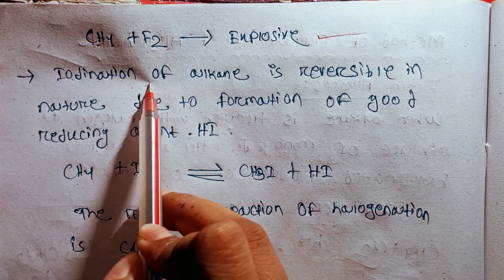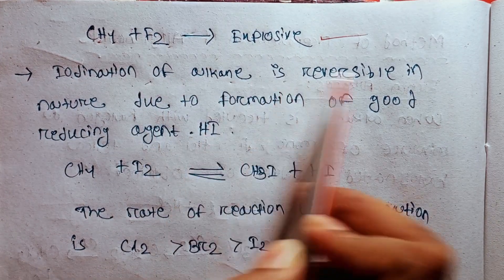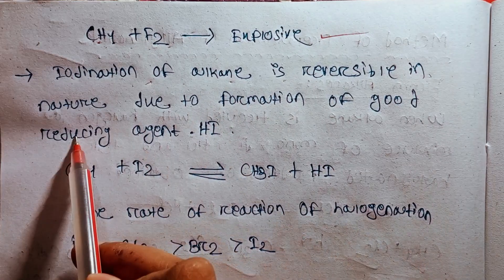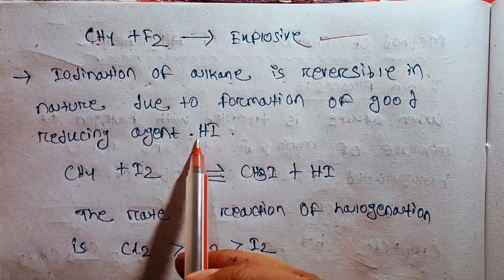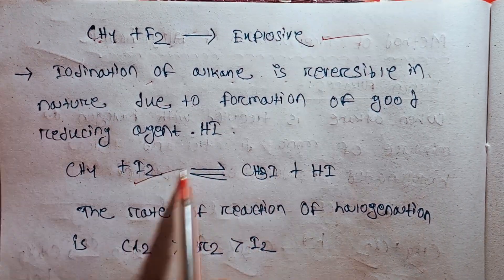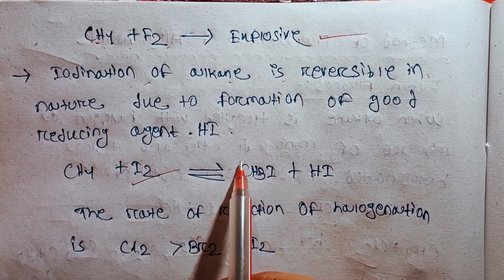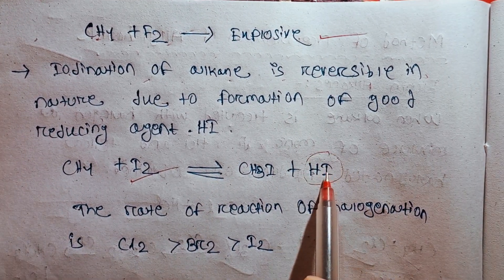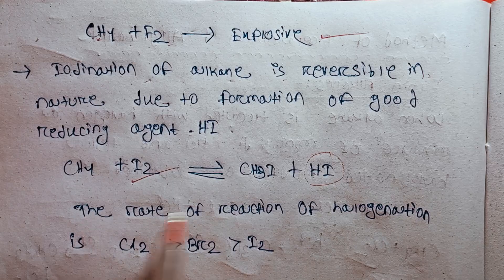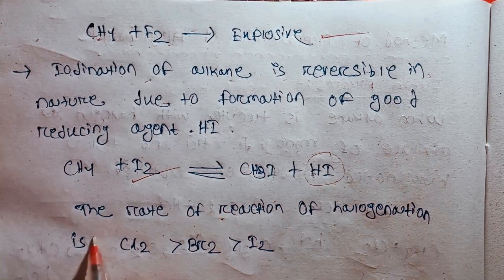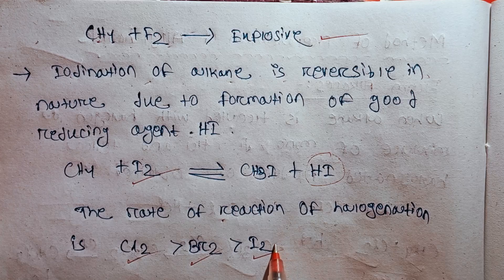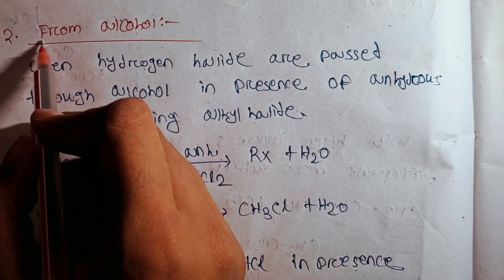This reaction with iodine is reversible in nature — the reaction of halogen with iodine is reversible in nature due to the formation of a good reducing agent. So what is the reaction of iodine? The reaction is reversible in nature.